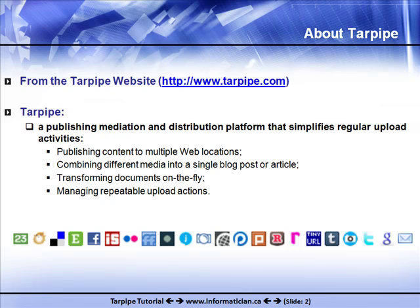If I were to give you my own definition of Tarpipe, I consider it to be an online mashup tool that allows distribution of content across social networking sites. It simplifies a lot of our repeat tasks that we're engaged in on a daily basis — things such as posting pictures and updates across sites like Facebook, Flickr, and Twitter. I don't consider myself to be a heavy user of social networking sites, but I do realize the overhead associated with managing an up-to-date profile on various sites.